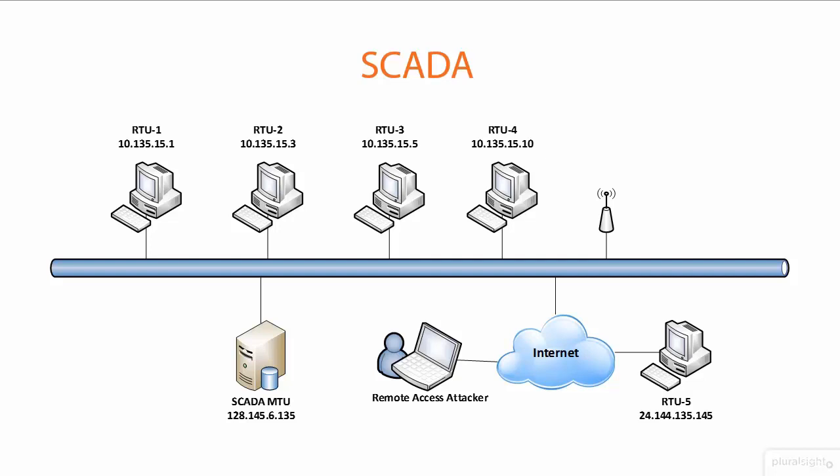We have to be aware that a remote access hacker can get in if our network is connected to the internet, or if there is some type of access point — legitimate or rogue. An attacker from within the network, even if it's not connected to the internet, could potentially do harm. Since these systems connect and control large pieces of infrastructure, we want to make sure they are as secure as possible.